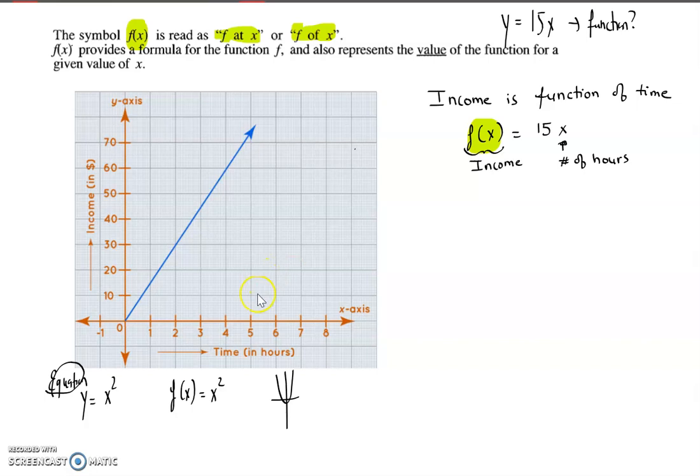In this case, income is a function of time. So remember, this is the independent variable. And that makes sense. The dependent variable depends on the independent variable. So that's what your income is. Your income is dependent on basically the number of hours. You can also say here that income is a function of time because whatever money you're going to make is going to depend on how much time you actually put in that job.